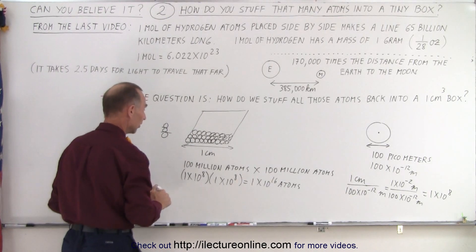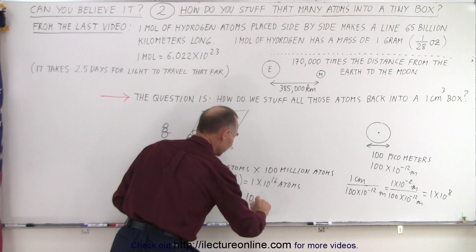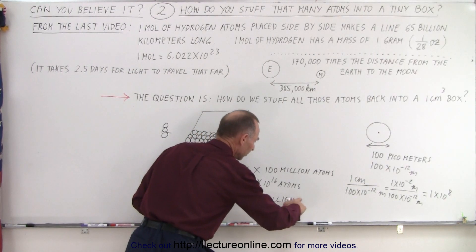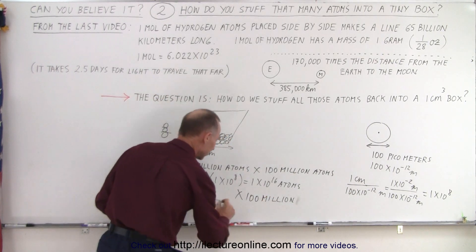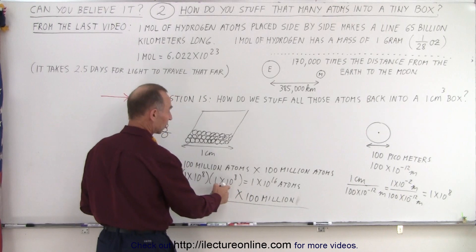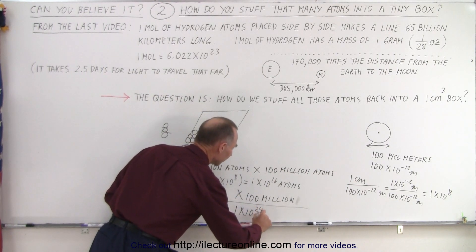So now you multiply this by another 100 million, because that's how many layers you have. When you add them all up, 1×10^16 times 10^8 gives us 1×10^24 atoms.